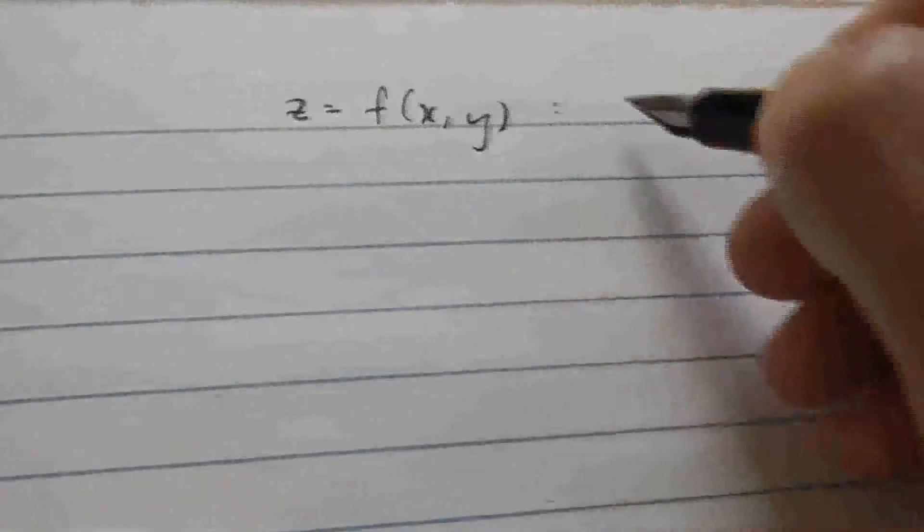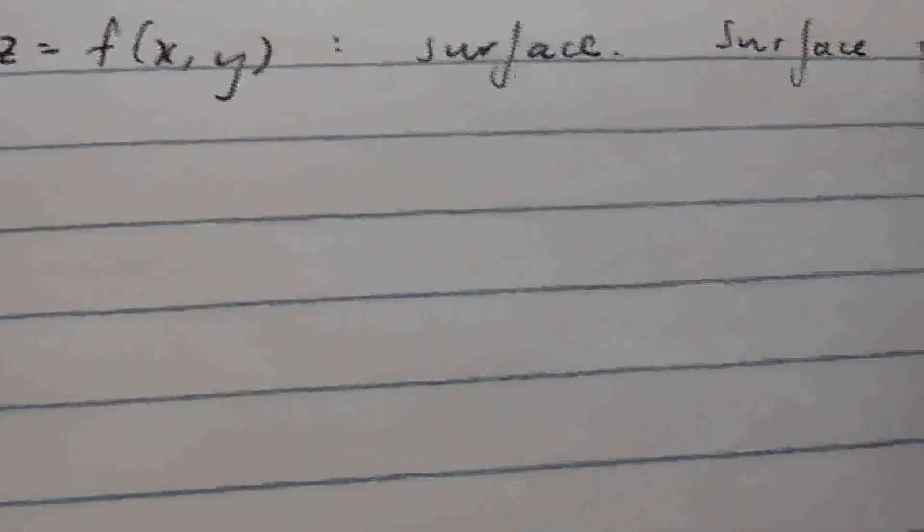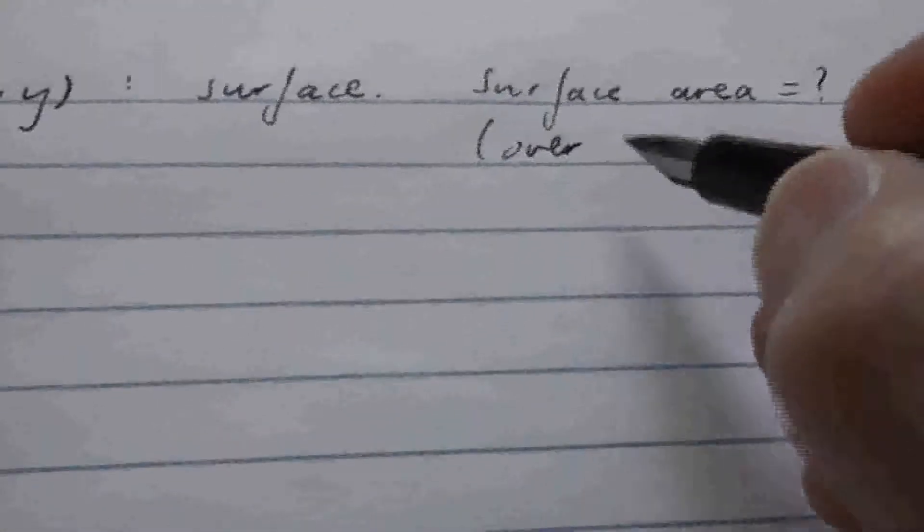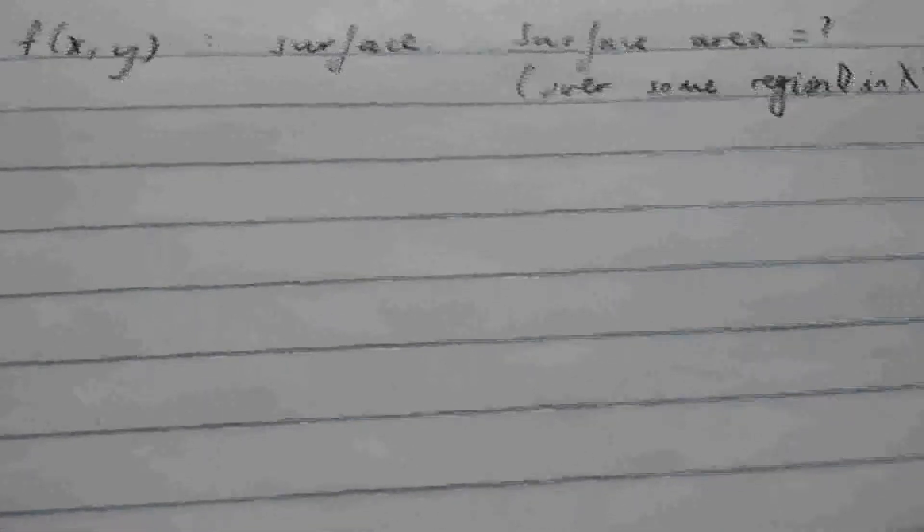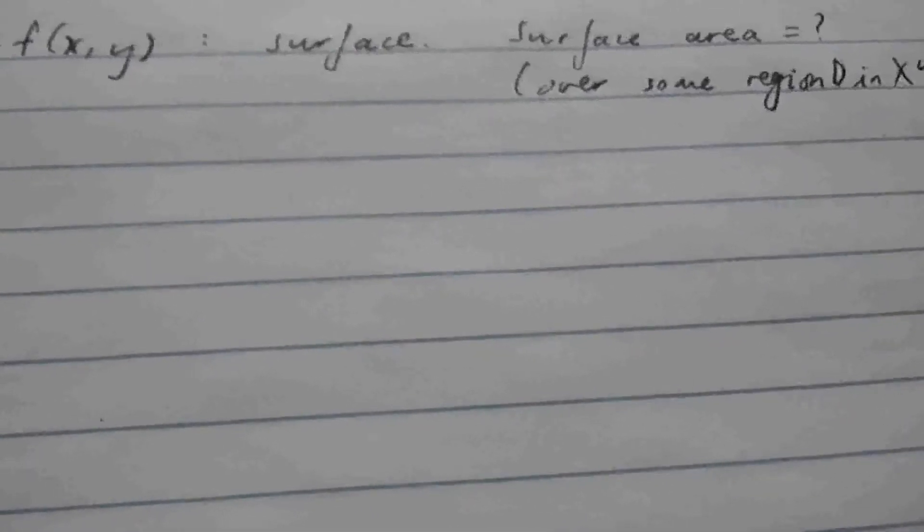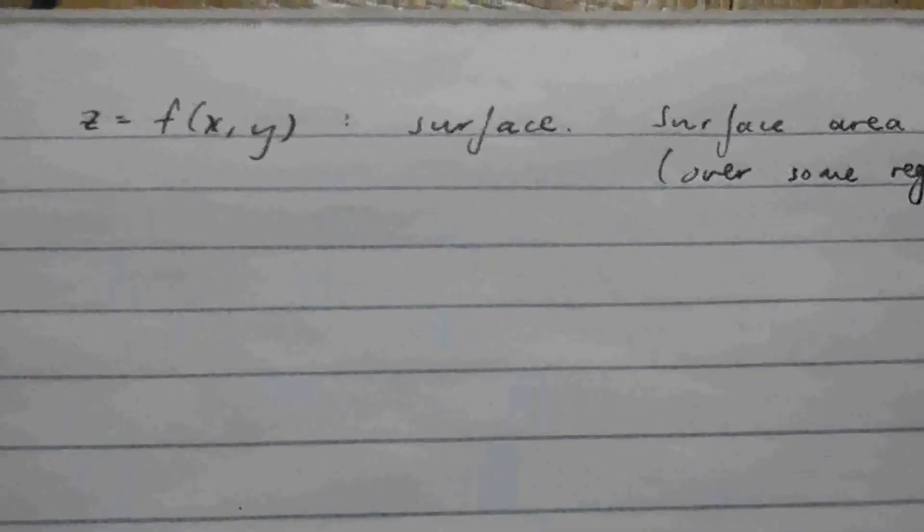So we have this is a surface. What is the surface area? How do we find this? This is over some region, let's call it region D in the x-y plane. Well, there's actually a very simple solution. Remember, we know how to do this in case that our surface is parametrized by two variables. So is there an easy parametrization of this kind of surface using two variables?